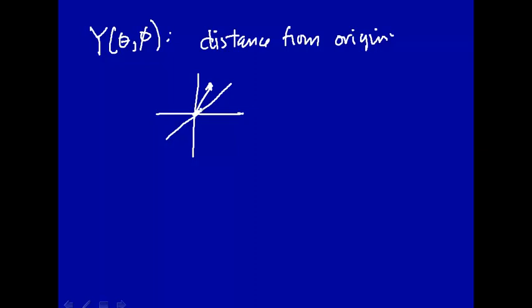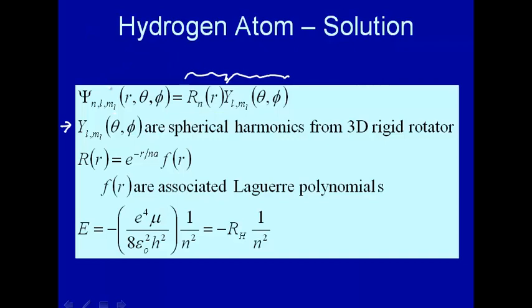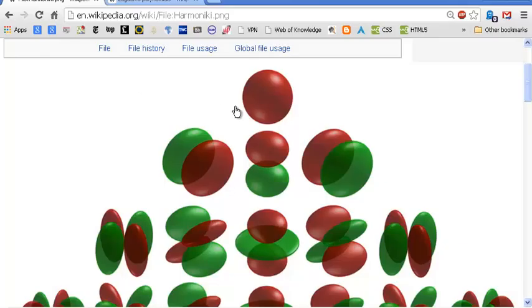So as you move this vector around in space, the length of the vector will increase or decrease depending upon what the value is of the wave function of the spherical harmonic. So that's what we're actually plotting in these pictures here.